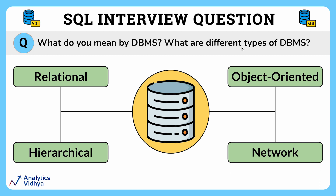The next type is an object-oriented database, which is a system where information or data is represented in the form of objects, used in object-oriented programming. Next is the hierarchical database, a system where data elements have a one-to-many relationship. Finally, the network database is a system where data elements maintain one-to-many or many-to-many relationships.